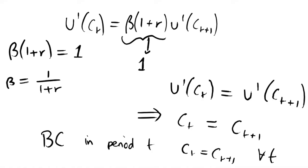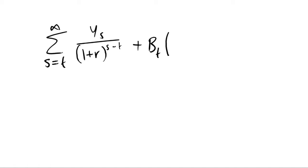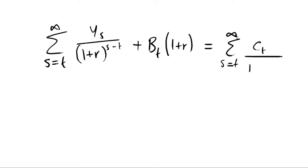We can now rewrite our budget constraint and simplify things quite a bit thanks to this assumption. We write our budget constraint starting at any general period t, with periods beyond that denoted s. We count income for each period s — t+1, t+2, t+3, and so on to infinity — and we compound interest with respect to period t rather than period 1. We have an initial income in period t from our endowment, and this equals the infinite sum of consumption.